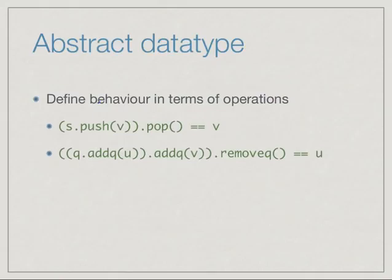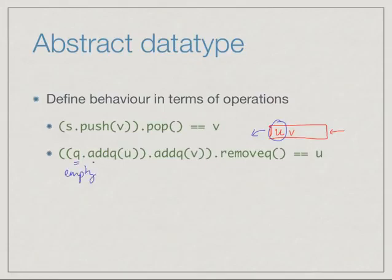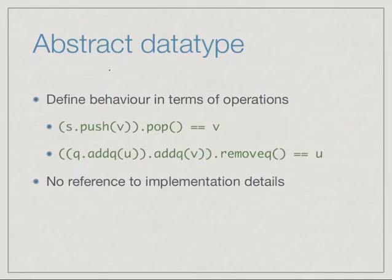Similarly, if we have an empty queue and we add two elements u and v, then remove the head of the queue, we expect to get back the first element, namely u. So if we add u, then add v, and then remove the head, we should get back u — the first element put in. The important thing is that we would like to define the behavior of a data type without reference to the implementation. This can be tedious, ensuring all properties between functions are captured, but this is technically how an abstract data type is defined.